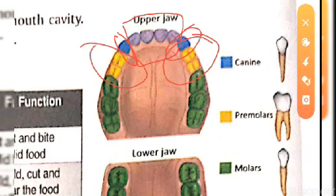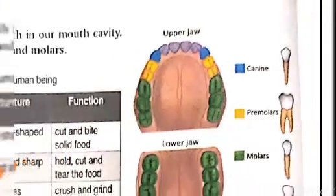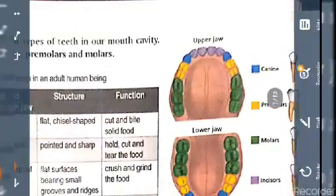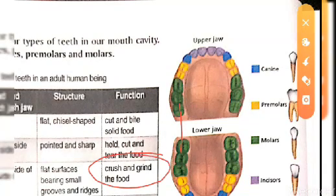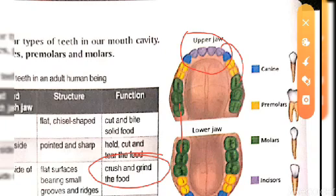After the canines we have the premolars. The function of the premolar is to crush and grind the food. For example, when we eat meat, we tear it first, then push the food to the back where the premolars crush it. The process is random — the teeth work together to crush and grind the food.